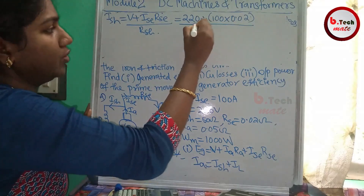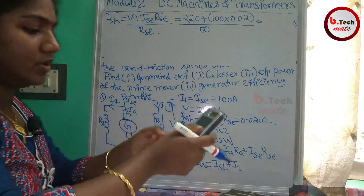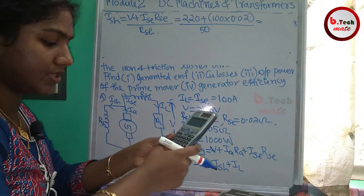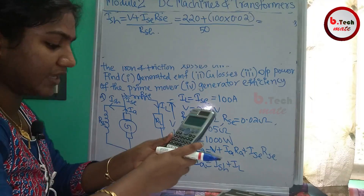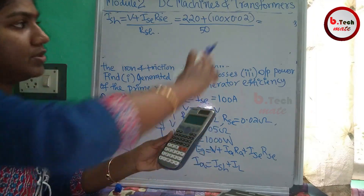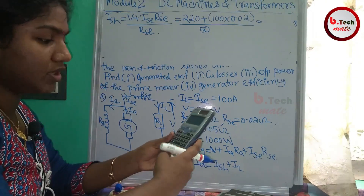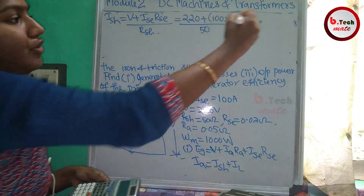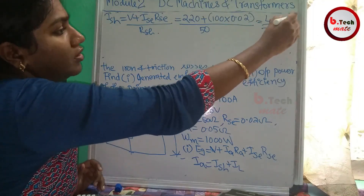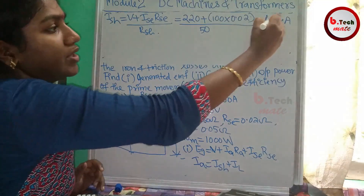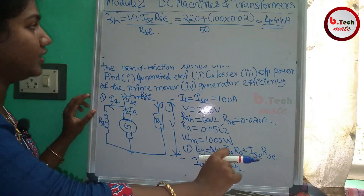Substituting the values: ISH equals 220 plus 100 times 0.02, divided by 50. Calculating the bracket gives the answer: ISH equals 4.44 Ampere.